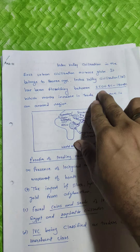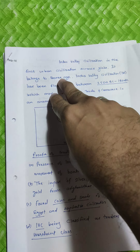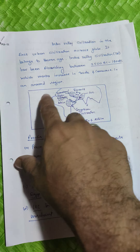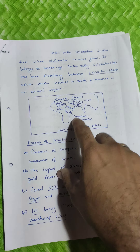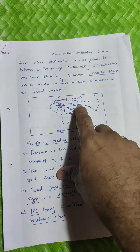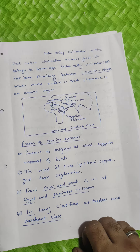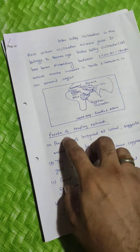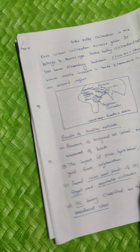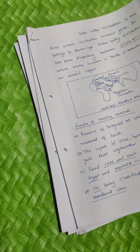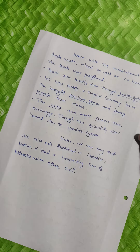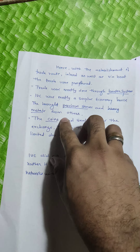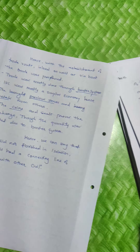Like the index value and the time frame — Bronze Age or something — that you should start with. Then there is one thing: a diagram showing where the index value works. Then proofs of trading at work and everything — write it in a point format so that the examiner can easily see it. Then similarly write in points and then conclude with your work.